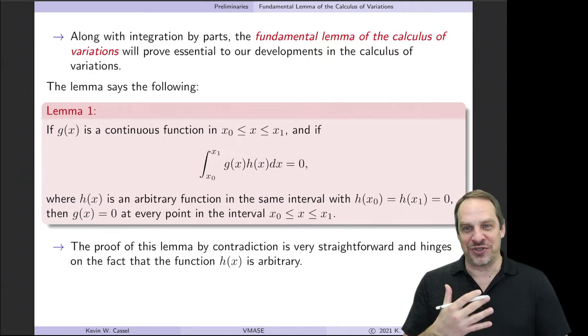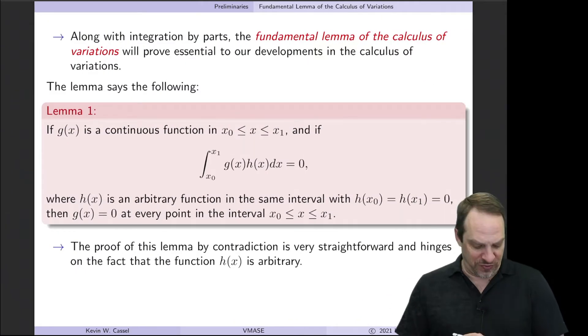So it's a lemma. A lemma is just a baby proof, just a little proof. This is what it says: If we have a function g(x) that's continuous over some interval in x from x0 to x1, and if the integral of g times h is equal to 0 over that interval,